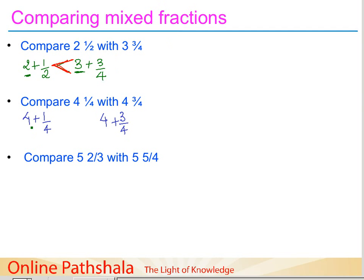Since the whole is the same — four for both — we now need to look at the fractional parts. It is essentially comparing one by four versus three by four. We check what type of fractions these are and we see the denominators for both fractional parts are the same.